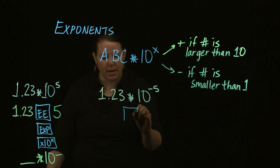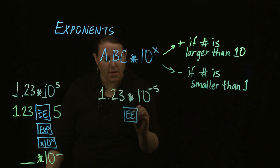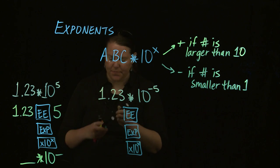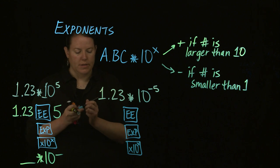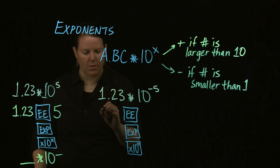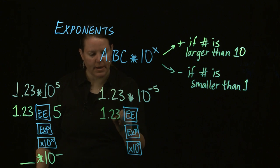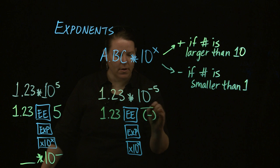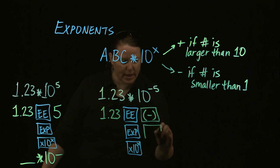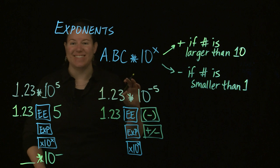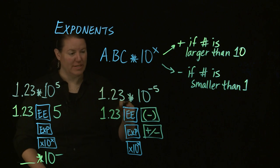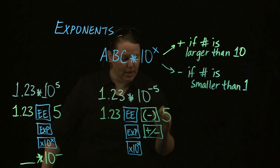For the negative exponent version, you'd use the EE, EXP, or times ten to the X button, enter 1.23, and since the exponent is negative, you would hit the negative button first. The negative button might look different from the subtract or minus button — it's different, so beware. Then you'd hit five.